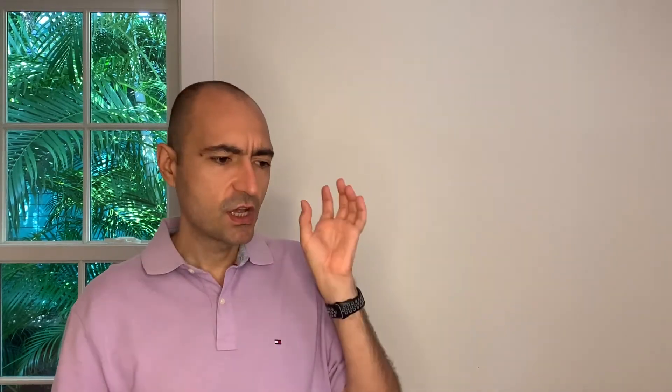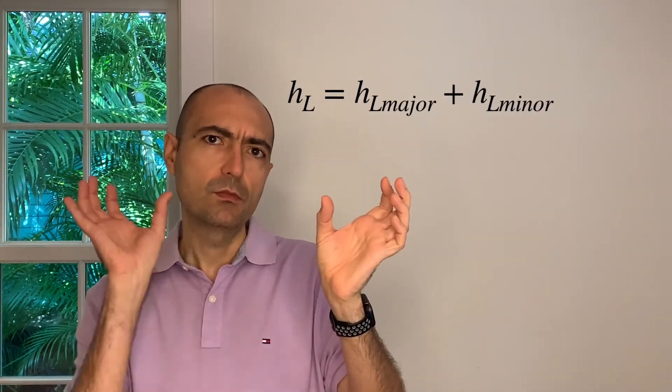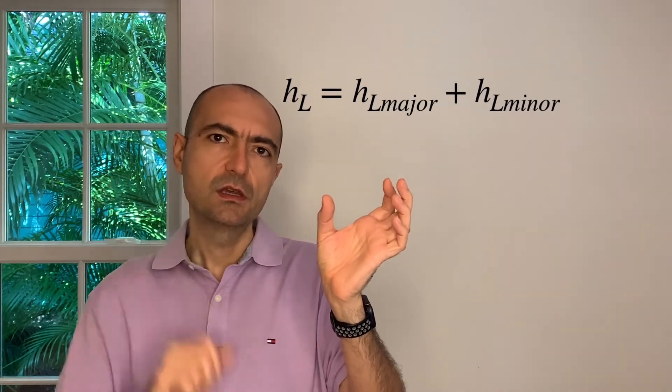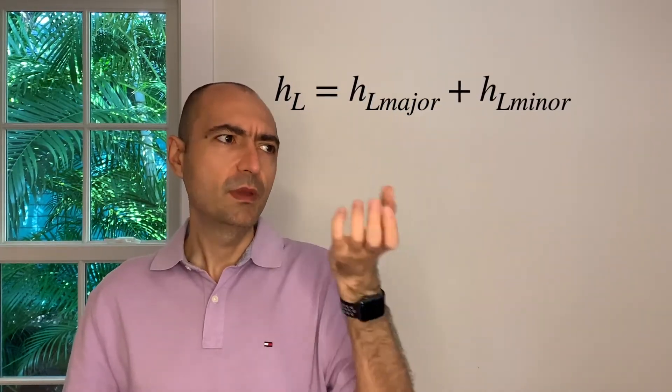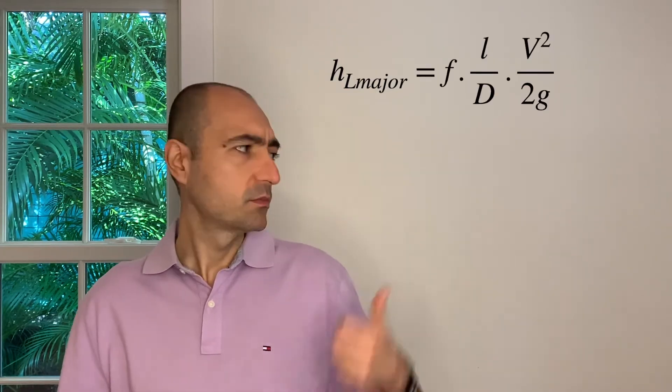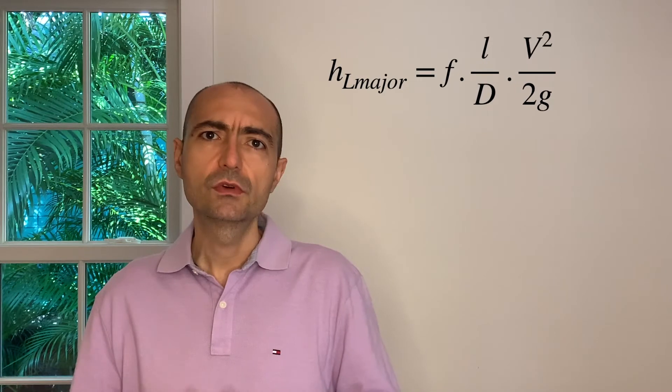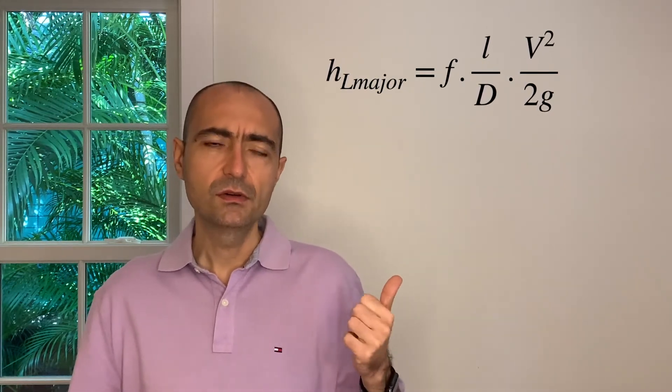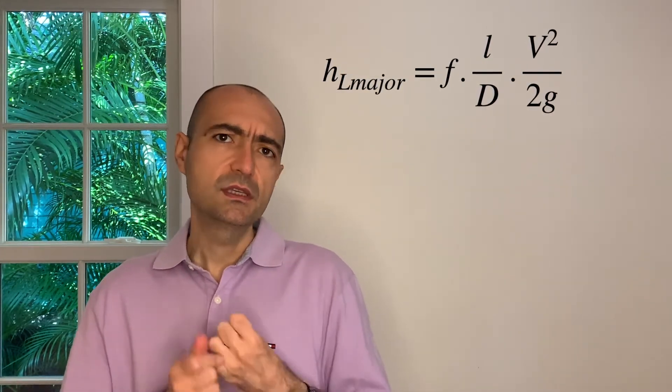And we divided this hL into two components: one is the major losses, one is the minor losses. Major losses is mainly from basically the viscous flow in pipes, in a straight pipe. I'm not accounting for any components of the piping system; I'm just looking at one particular pipe and seeing what kind of a loss do I get. You can think of this as the friction in your mechanics. And I obtained for you for major loss, hL major, I'll put it up there: f times L over D times V squared over 2g.